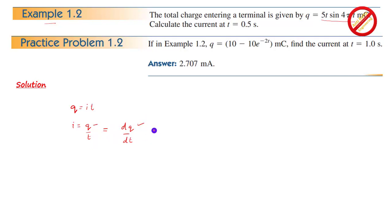Now our equation will become: current equation is i is equal to dq by dt. This is our formula.